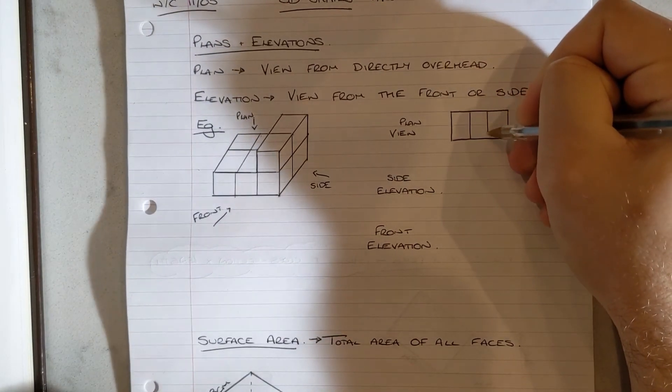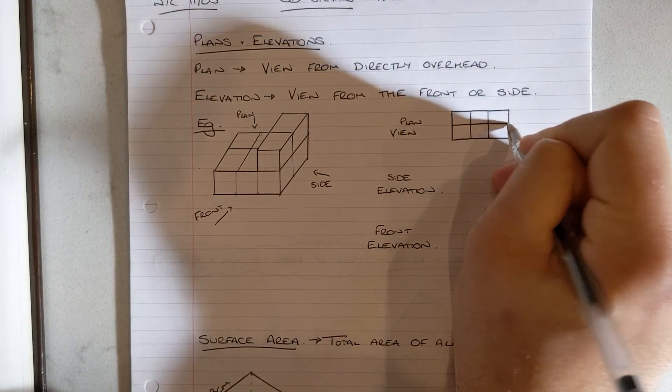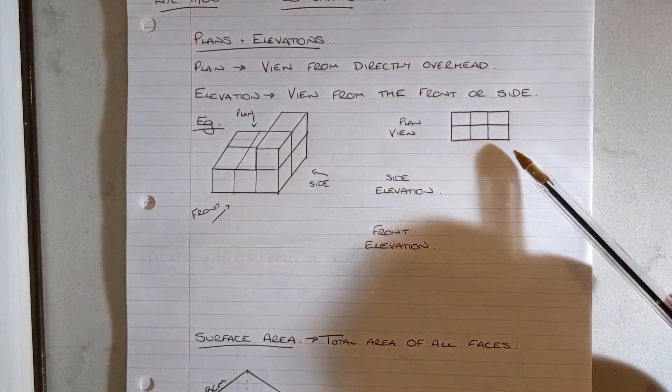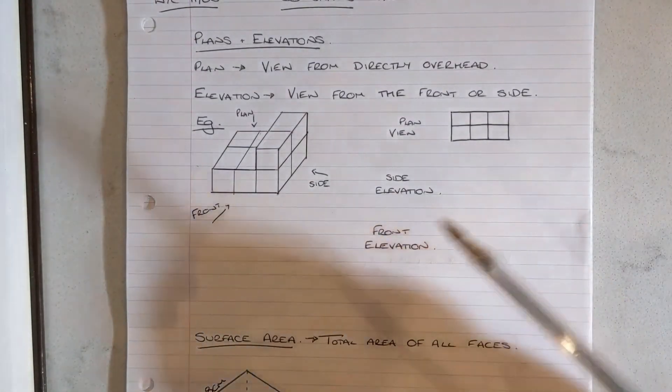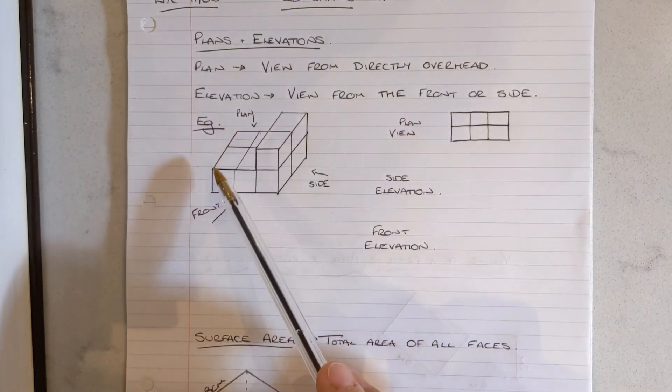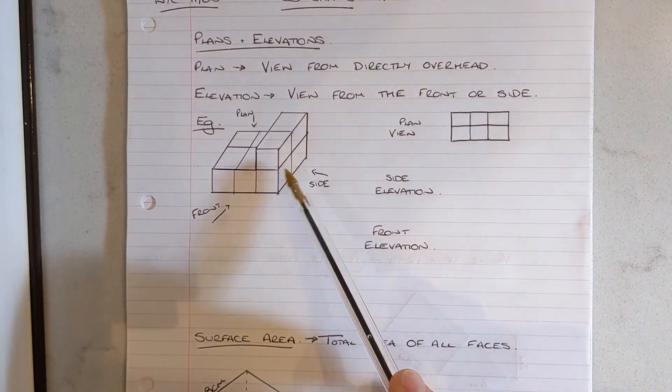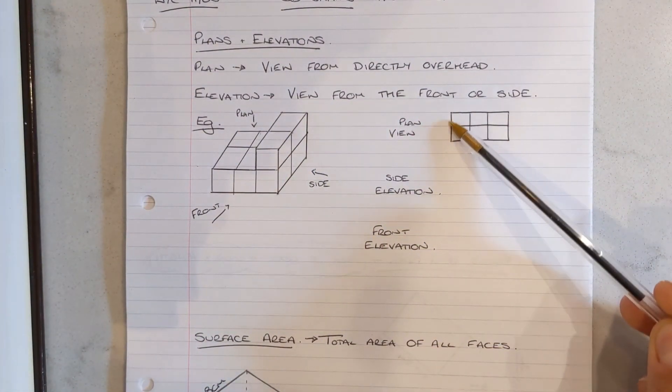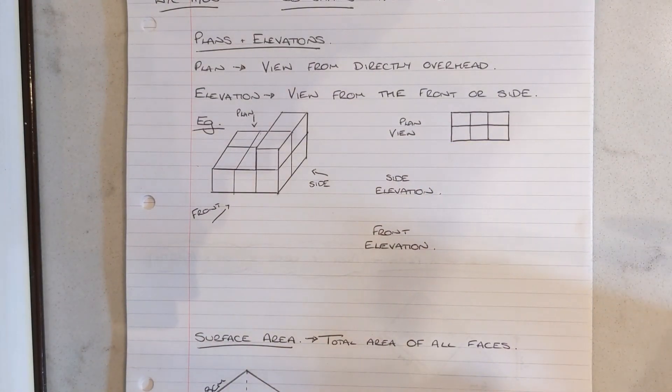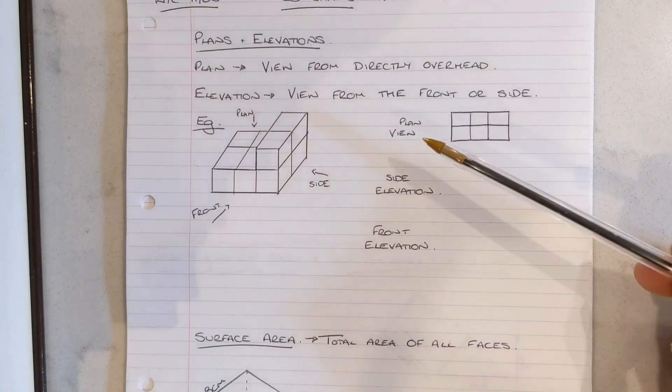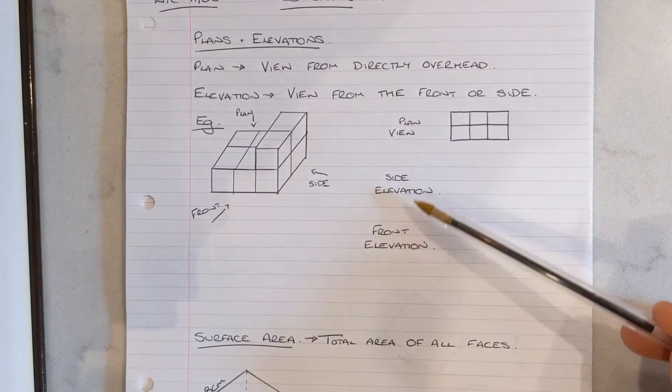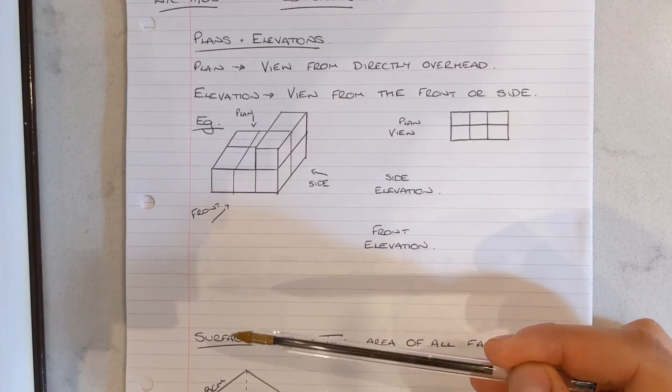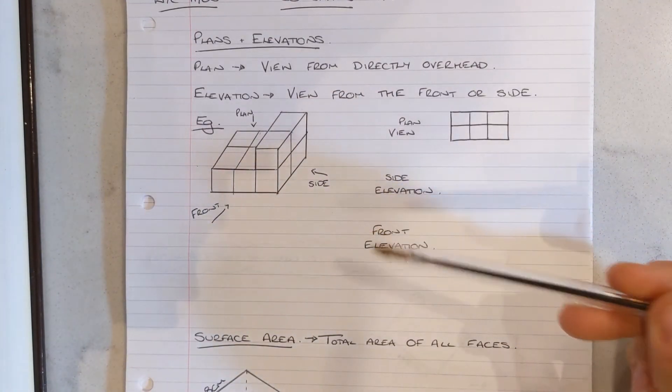I'm also drawing in the squares. In an exam, you may be given measurements, and you would need to accurately draw in that 2D shape there. For example, if this was a 2 centimeter by 3 centimeter shape, you would need to make sure that your plan view had 2 centimeters accurately drawn coming down here and 3 centimeters accurately drawn going across there. Obviously, depending on how we hold the shape will determine where our plan view, side elevation, and front elevation are, but that will be specified in the question as it is here.